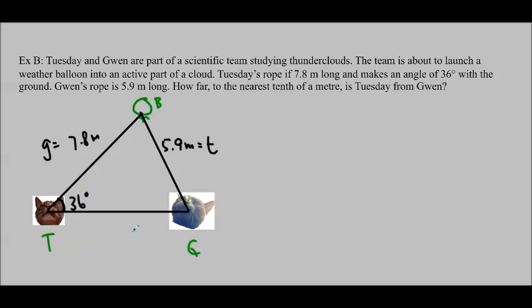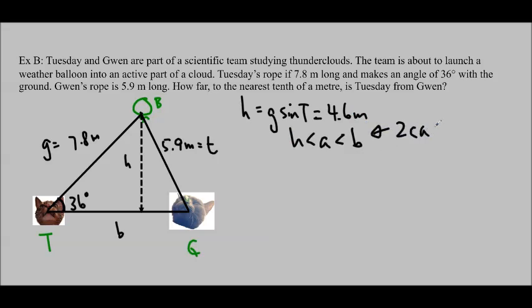Let's label some of these things in our chart. Tuesday's rope is 7.8 meters, which is little g because it's across from big G. Gwen to the balloon is 5.9 meters, which is little t because it's across from Tuesday. And the angle Tuesday has from the balloon to the ground is 36 degrees. So we want to know what little b is. We can test out whether or not this height is the right length by using h equals g times sine t. We actually would find that g sine t is 4.6 meters. So that falls within the a greater than h but less than b range, which tells us we have two cases, two triangles.